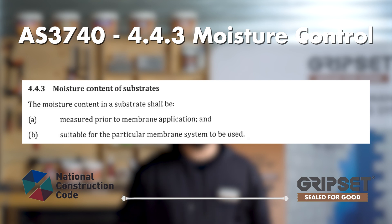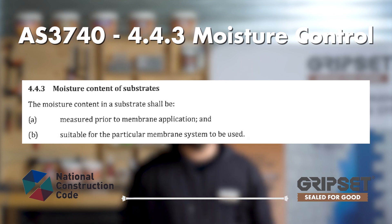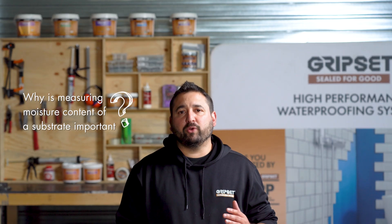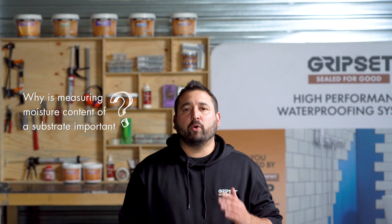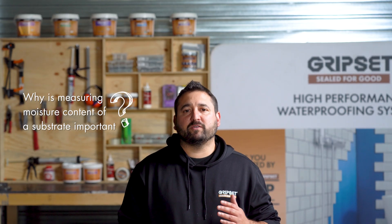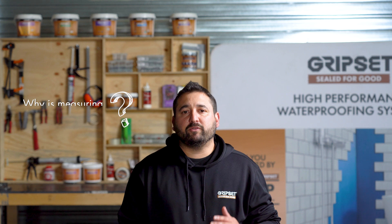The moisture content in the substrate shall be: a) measured prior to the membrane application, and b) suitable for the particular membrane system installed. So why is measuring moisture content of a substrate important? It's important because excessive moisture in a substrate can be detrimental to the waterproofing system.